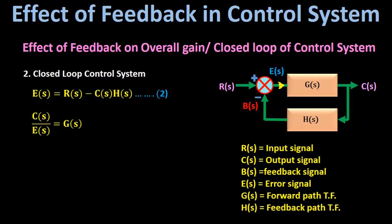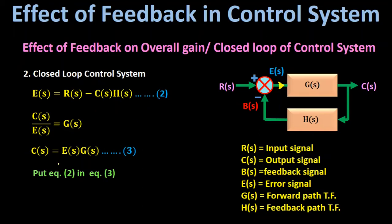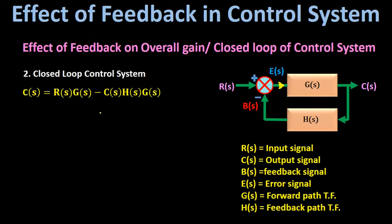For the forward gain block G(s), the input is the error signal E(s) and the output is C(s). Therefore C(s)/E(s) = G(s), so C(s) = E(s) × G(s). Let this be equation number three. Now substituting the expression for E(s) from equation two into equation three, we get C(s) = [R(s) − C(s) × H(s)] × G(s).